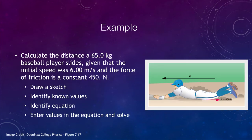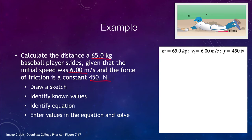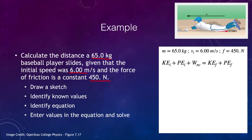Now let's look at a worked example. We want to calculate the distance that a 65-kilogram baseball player slides, given that the initial speed was 6 meters per second and the frictional force is a constant 450 newtons. We know the mass, the initial velocity, and the frictional force. Using the work-energy theorem: initial kinetic energy plus non-conservative work equals the sum of final kinetic and potential energies.